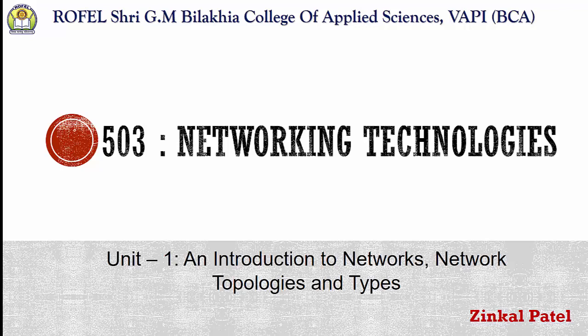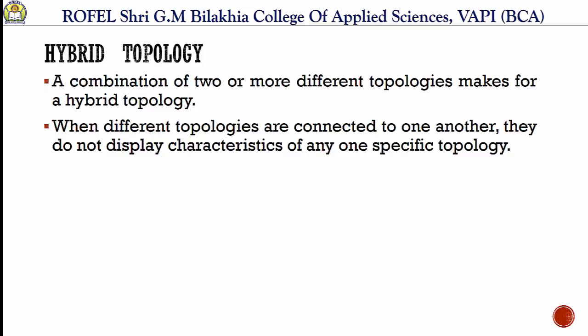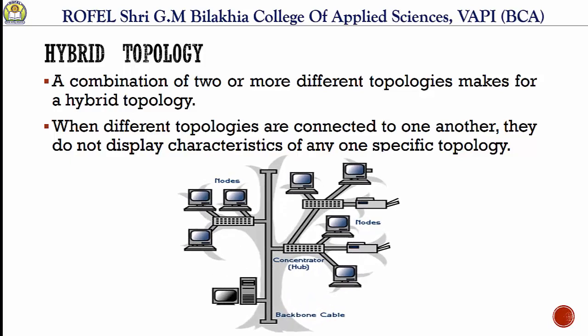Welcome to network technologies. In Unit 1, we are studying network topologies, and now we will cover the last topology: hybrid topology. Hybrid topology is a combination of two or more different topologies. When two different topologies are connected to one another, they do not display characteristics of any one specific topology, because it is a combination of more than one topology.